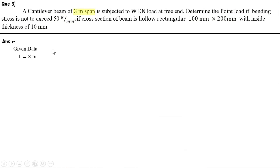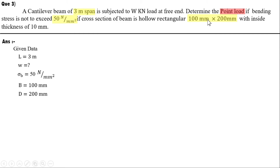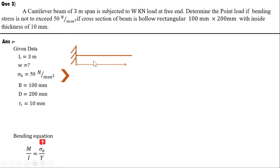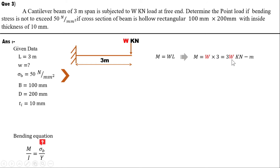Problem 3: a cantilever beam of span 3 m is subjected to a point load W kN at the free end. The bending stress is given as 50 N/mm². The cross section is hollow rectangular with wall thickness 10 mm. Using M/I = σ_b/y, and the formula for maximum bending moment of a cantilever M = W×L, with L = 3, we get M = 3W kN·m.